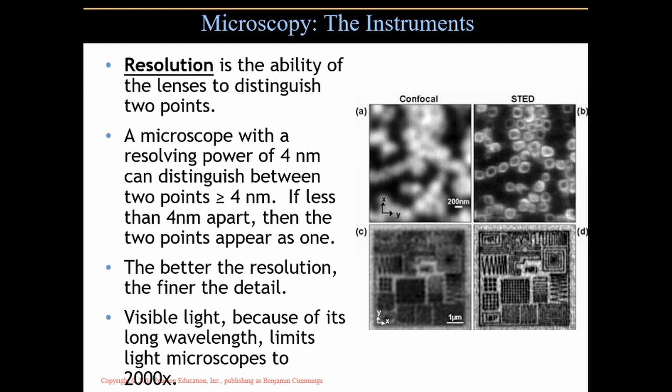There is magnification, which is simply enlarging an image, but there is also another term associated with microscopy: resolution. Resolution is the ability of the lenses to distinguish between two points. For example, a microscope with a resolving power of four nanometers — about average for a good light microscope — means it can distinguish between two points that are four nanometers or more apart. If the distance is less than four nanometers, the two points blur together and appear as one. The better the resolution, the finer the detail, and that's where the cost of a lens comes from.